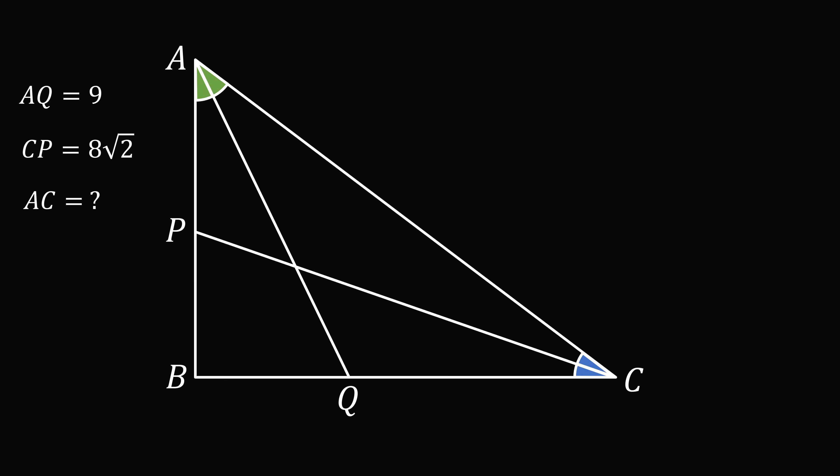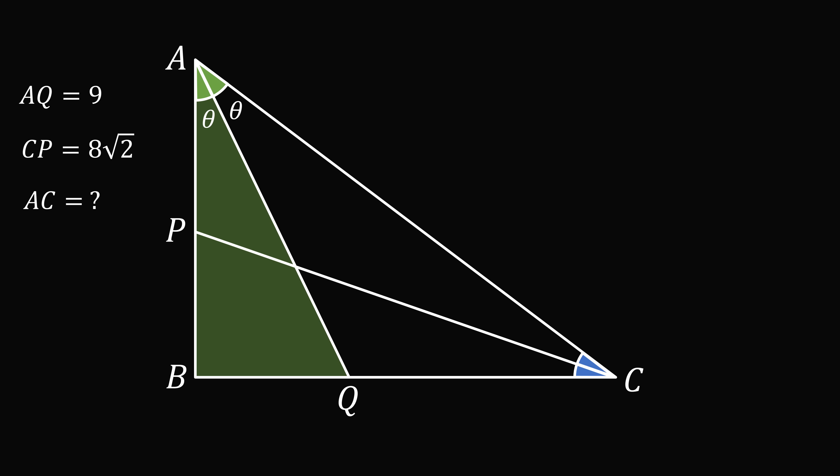To get started, let B AQ be equal to theta. Then, since we have an angle bisector, Q A C is also equal to theta. Now, in triangle ABQ, we have AB is equal to AQ multiplied by the cosine of theta. We know AQ is equal to 9, so AB is equal to 9 cosine theta.